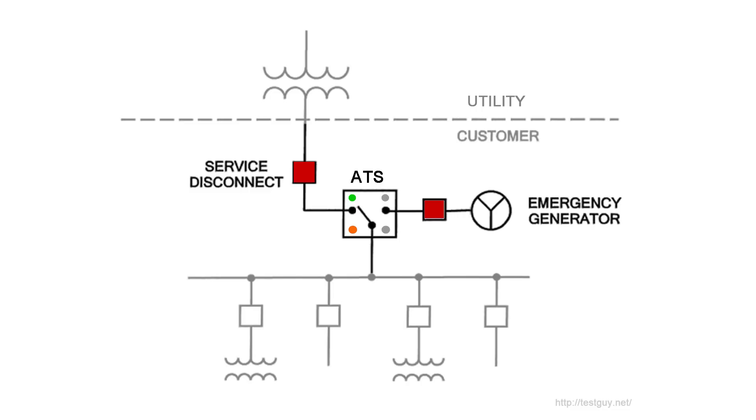Step 3. Simulate a utility outage by opening the normal source circuit breaker. The delay to engine start timer begins its timing cycle. After the timer has completed its timing cycle, the engine start contacts close to start the generator.